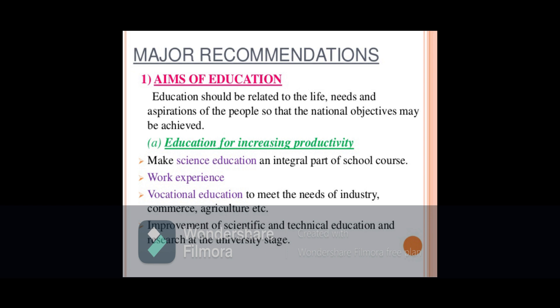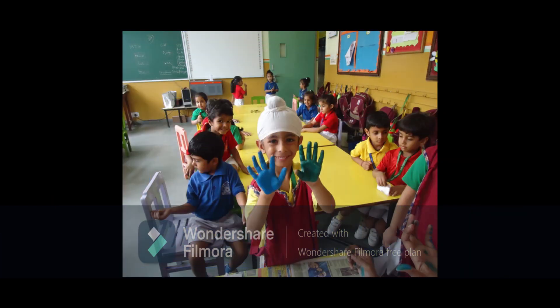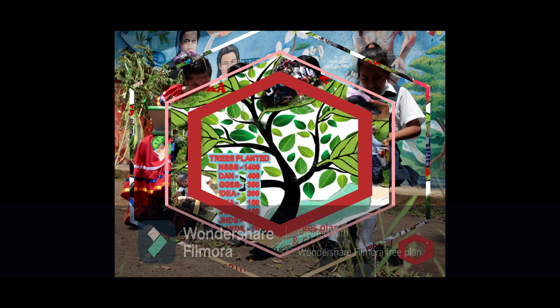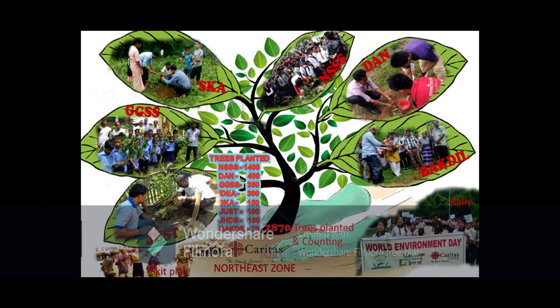At the primary stage, the report recommended that the aims of teaching science in primary schools should be to develop proper understanding of the main facts, concepts, principles, and processes in the physical and biological environment. Environmental education at primary, secondary, and higher secondary levels was treated in a different way.